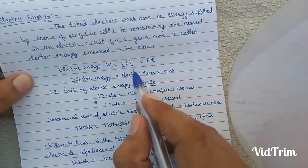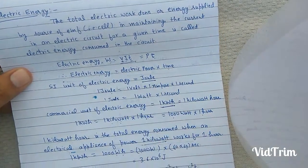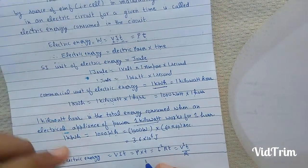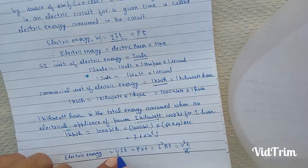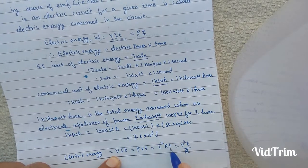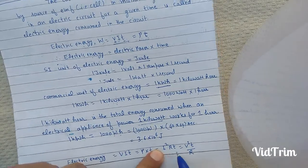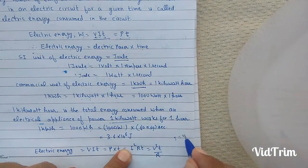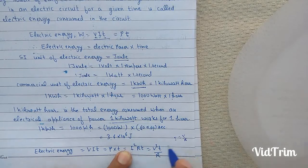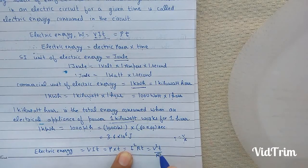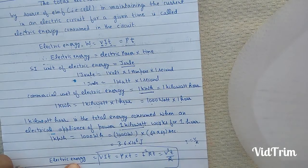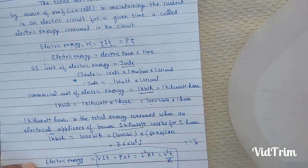The electrical energy is equal to VIT, or P × T. Now, substituting V = IR from Ohm's law, this becomes I²RT. And if in place of I we substitute V/R, this becomes V²T/R. So these are the formulas of electrical energy.